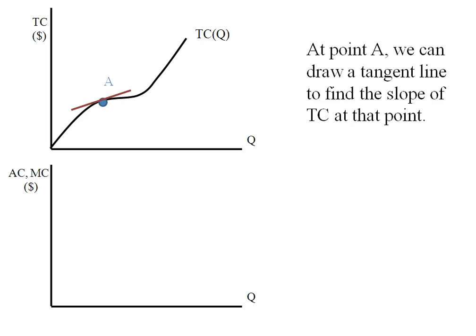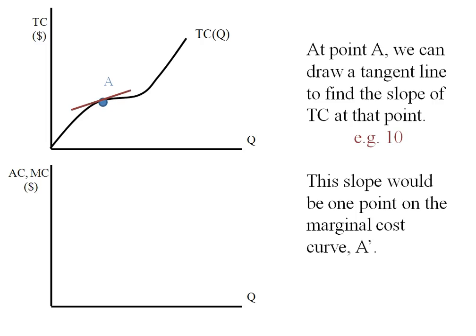Here's my tangent line, and let's suppose that line has a slope of 10. The slope would be one point on the marginal cost curve, which we'll call A'. If I take it down to my second grid and find the ten dollars, that would be one point on my marginal cost curve.